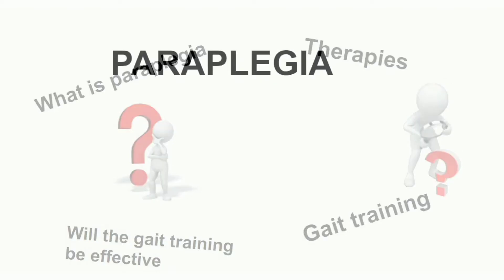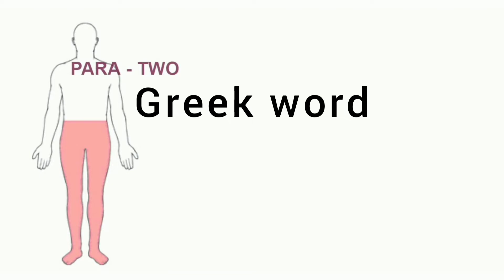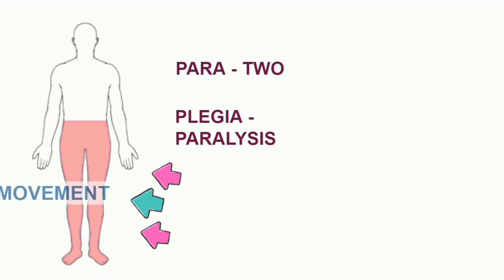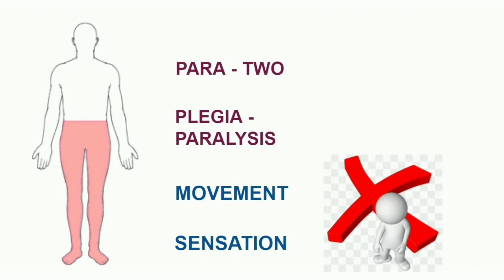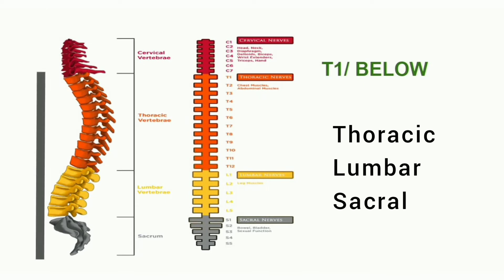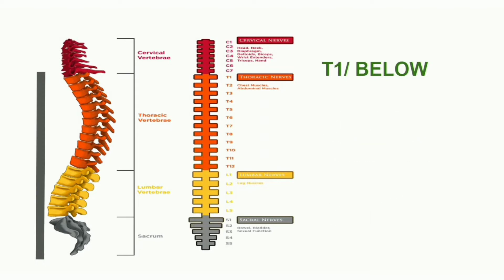First, what is paraplegia? It is derived from a Greek word — 'para' meaning two, and 'plegia' meaning paralysis. In paraplegia, the distal half of the body experiences loss of both movement and sensation — in both the right leg and left leg. This occurs due to spinal cord injury at or below the T1 level, that is, injury to the thoracic, lumbar, or sacral region.